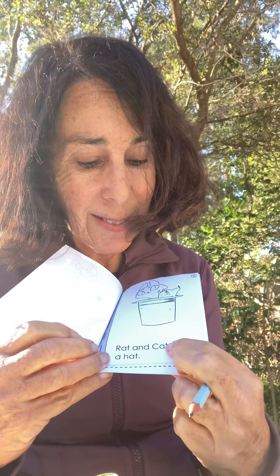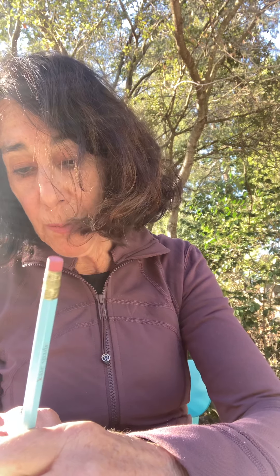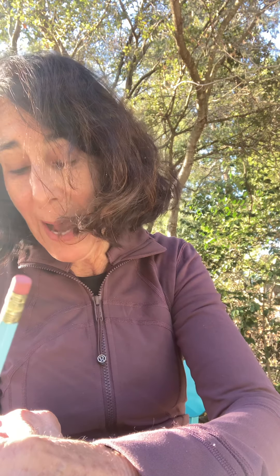A new one. Ready? Rat and cat sat in a hat. H-at. Put it together: hat. And 'in' is a sight word. So: circle rat, underline 'and,' circle cat, circle sat, underline 'in,' underline 'a,' circle hat. What a lot of -at words! This is a silly page. Rat and cat sat on hat. And there they are sitting on hat. Circle, underline, circle, circle, and circle.